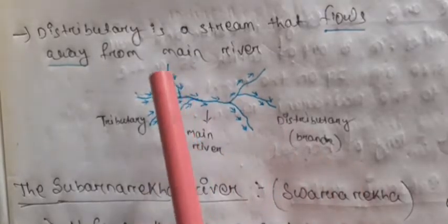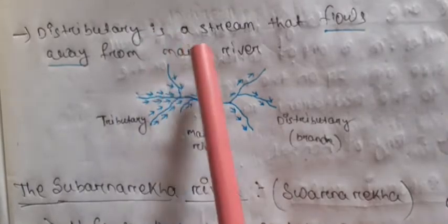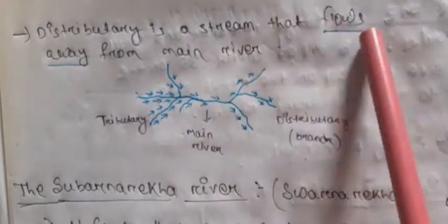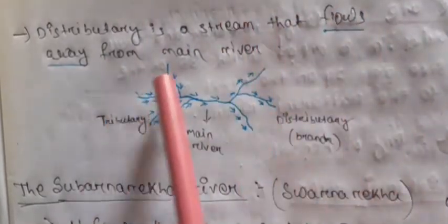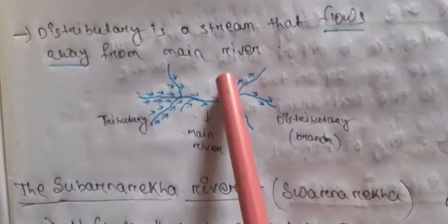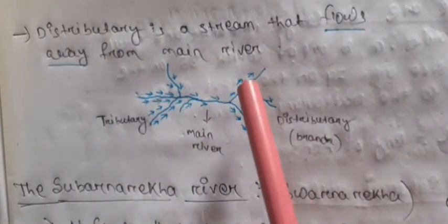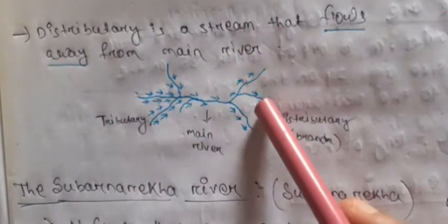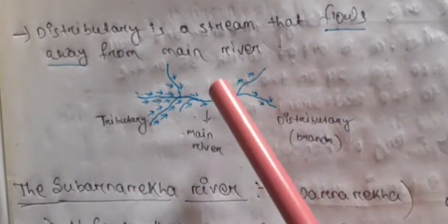A distributary is the opposite of a tributary. It is also a stream or river that flows away from a main river — meaning it takes water from the main river.